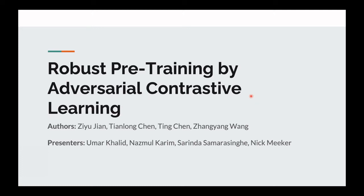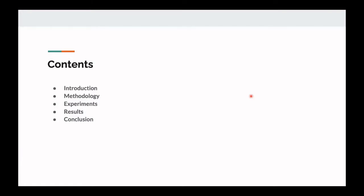My team will be presenting this paper: Robust Pre-Training by Adversarial Contrastive Learning. For the contents of what we'll discuss, pretty straightforward in the order the paper goes over it. We'll cover the introduction and motivation, then turn it over to Sarinda to cover the methodology, and then Lizmul and Umar will finish with the experiments and results section. Then we'll open up for discussion.